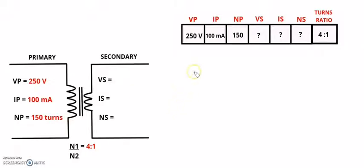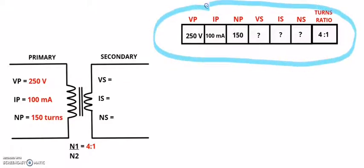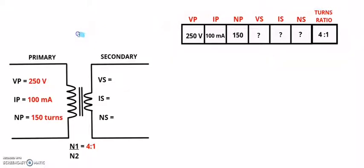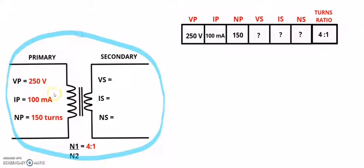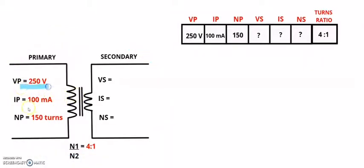What we can see here is we already have the information about the transformer. The best way of approaching a calculation like this is to draw the transformer symbol, put all of the given information on the primary side, and if you have values, put those on the secondary side as well.